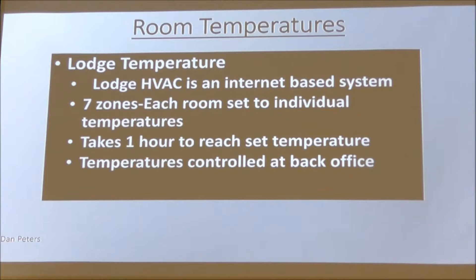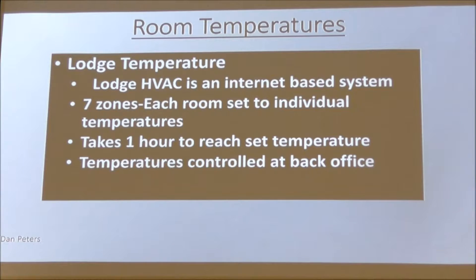The system shows me there are seven zones in this building, and it tells me what the temperature is in each area. The optimal temperature is 72 in the winter and 68 in the summer. If you need to change the temperature, know that you only have a 4-degree limit. We generally won't change it because whether your group is cold or hot, 72 is where it's set, and that's the optimal temperature for the building.